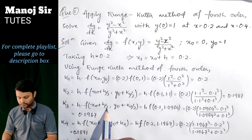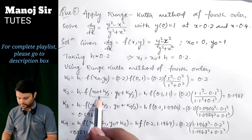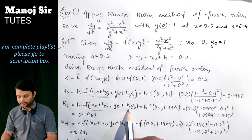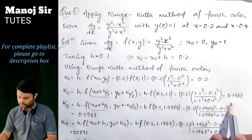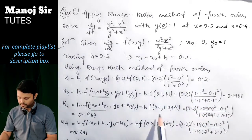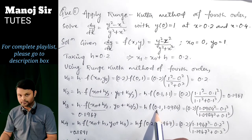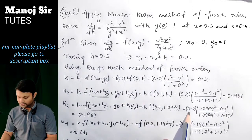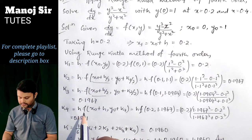For k₃ = h·f(x₀ + h/2, y₀ + k₂/2). The x-value is the same as before: 0.1. Note that here we use k₂, not k₁. So y₀ + k₂/2 = 1 + 0.1967/2 = 1 + 0.0984 = 1.0984. Putting x = 0.1 and y = 1.0984 into the function and multiplying by 0.2, we get k₃ = 0.1967.